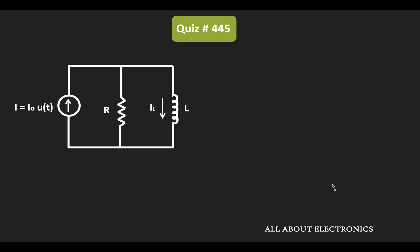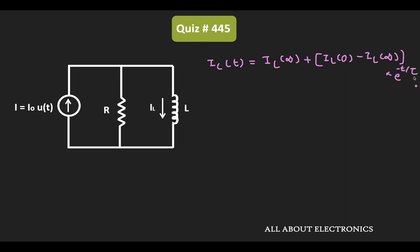With the help of this initial and the final value, we can easily find the time required for the current through the inductor to reach its 99% value. We also need to know how the current through the inductor varies with time. The given RL circuit is a first order circuit and for a first order circuit the current through the inductor can be given as IL(t) = IL(∞) + [IL(0) − IL(∞)] · e^(−t/τ), where τ is the time constant of the circuit, equal to L divided by R.